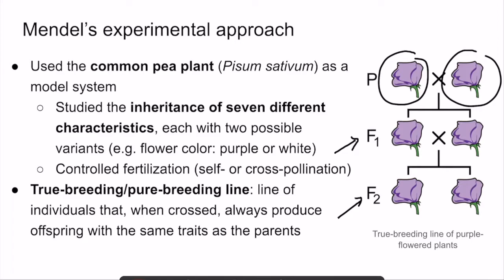Mendel repeated this same procedure for all of the traits he was studying, establishing true breeding lines for all of them. For example, he had a line of true breeding white flowers in addition to his true breeding line of purple flowers.